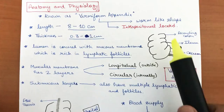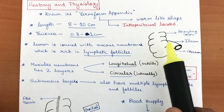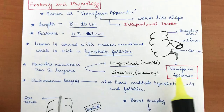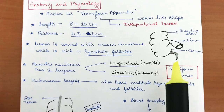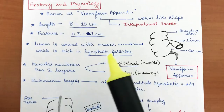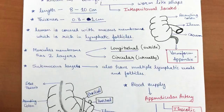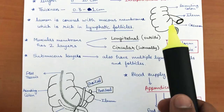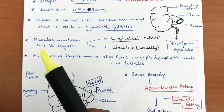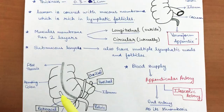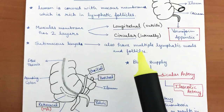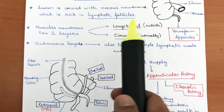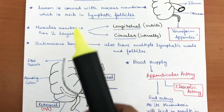As you can see here, this is our ascending colon and this is our cecum part, where the ileum enters. This little worm-like structure is the vermiform appendix. The lumen is covered with a mucous membrane which is rich in lymphatic follicles. The muscular layer has two layers: a longitudinal layer on the outside and a circular layer internally. The submucosal layer also contains multiple lymphatic vessels and follicles, just like the mucous membrane.